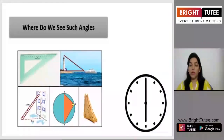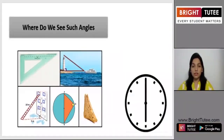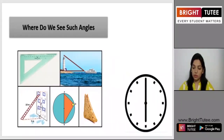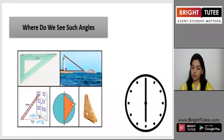Where do you see such angles in your surroundings? Look around you and observe images forming these kinds of angles. Here are some examples. If you see a ladder kept on a building, at the bottom it is forming a 90 degrees angle. Similarly, a bread piece of a sandwich is also forming a 90 degrees angle.